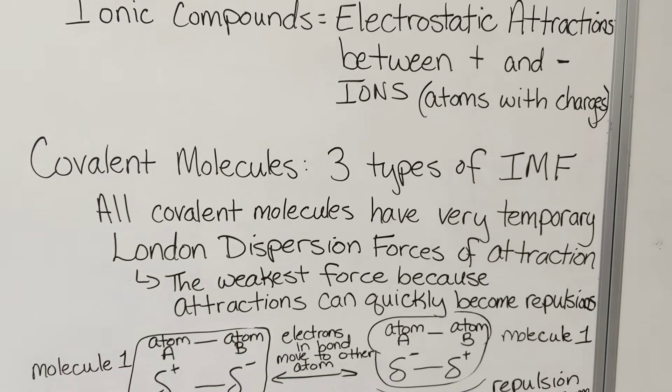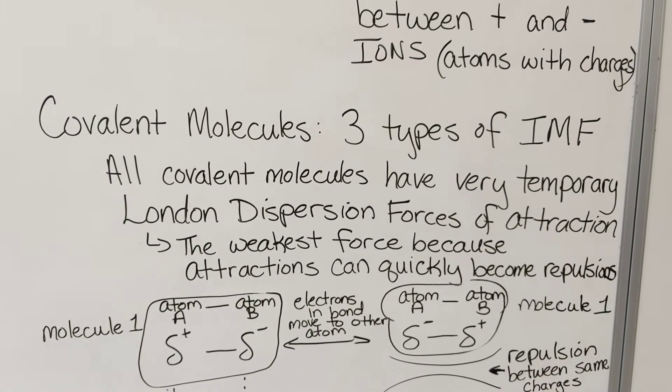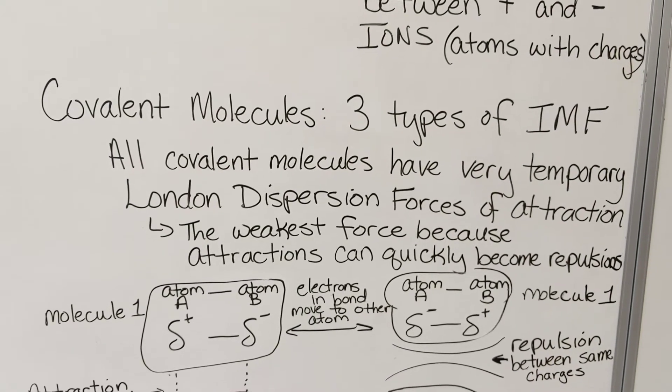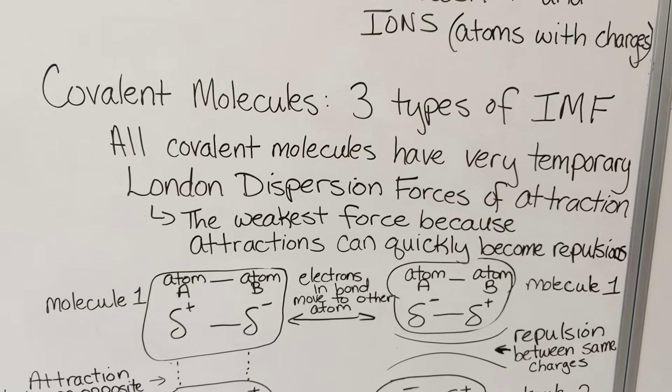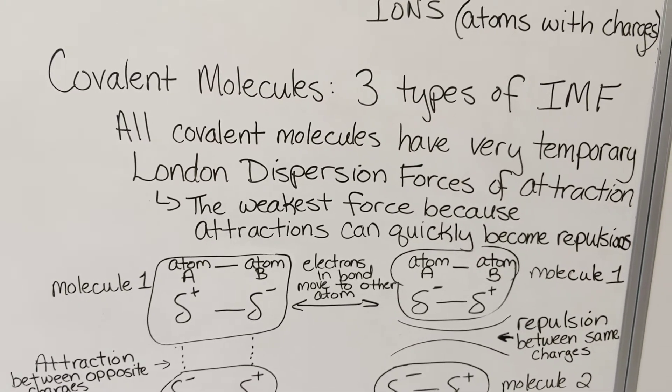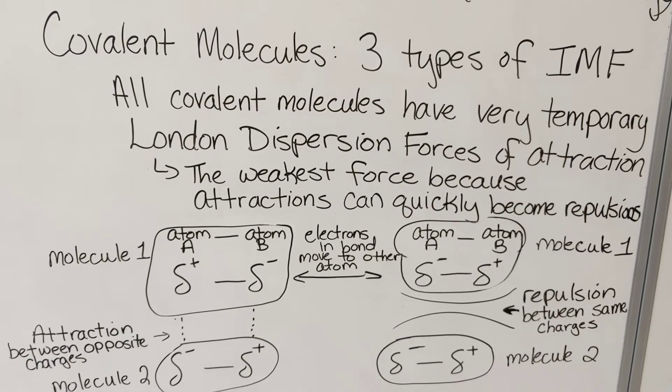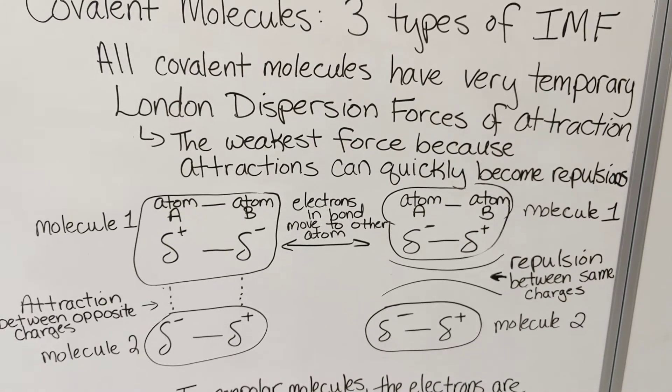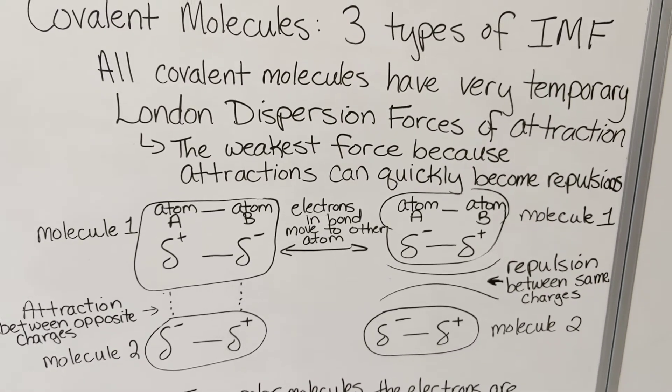NCl3 is a covalent molecule. You can refer to the part 1 video of this series where we were naming the compound and found that it was covalent. There are three types of intermolecular forces possible for NCl3.